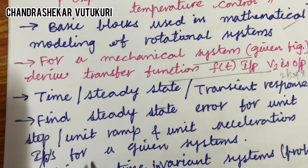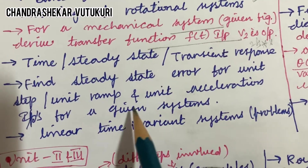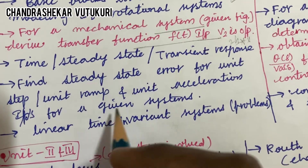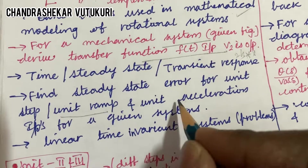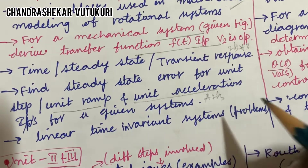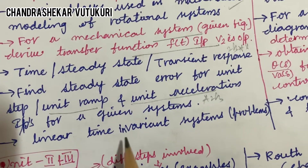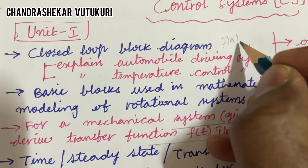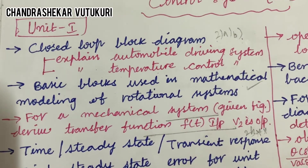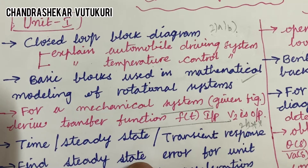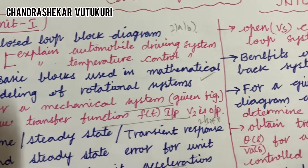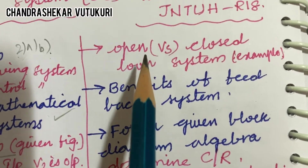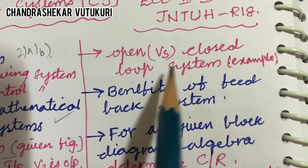Time response, steady state response, and transient response may be 2-mark or 3-mark questions. Find steady state error for unit step, unit ramp, and unit acceleration inputs for a given system — related to unit ramp and unit acceleration there may be a 2-mark, 3-mark, or long question. Linear time invariant system problems may be part of 2a as well as 2b in the long questions, and even from 1a and 1b you can get such questions in short form.